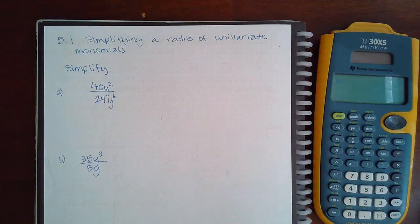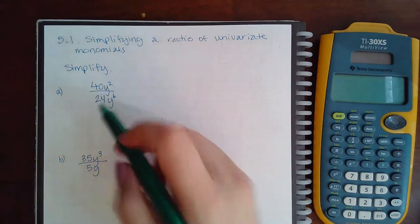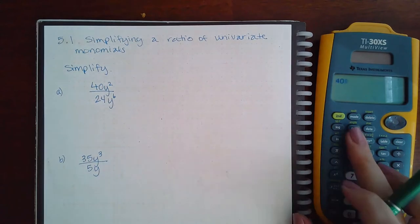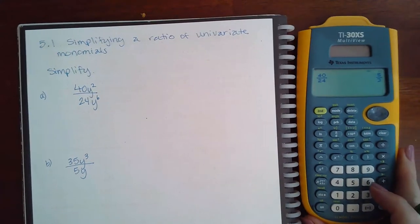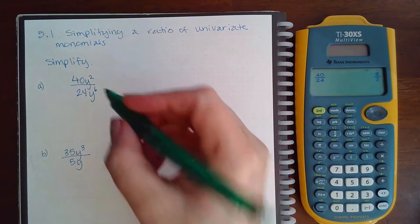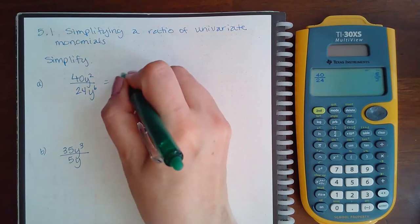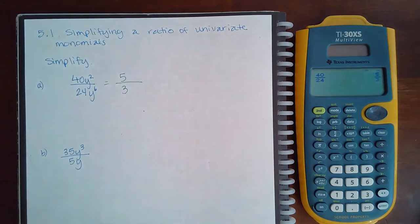Here we have 5.1, simplifying a ratio of univariate monomials. When we simplify the numbers, we can type in the calculator 40 over 24. It'll reduce the numbers for me, giving me 5/3. So I know that in the end I'm going to end up with a 5 on top and a 3 on the bottom.